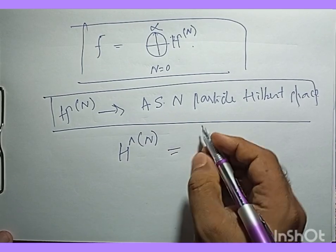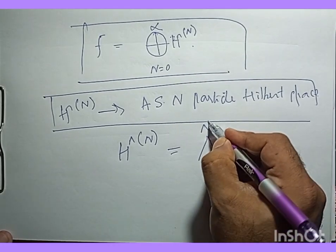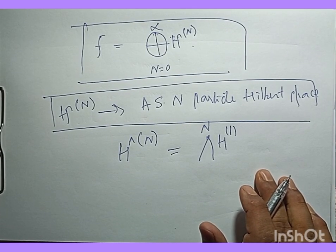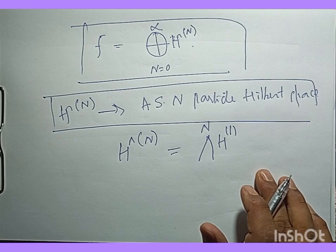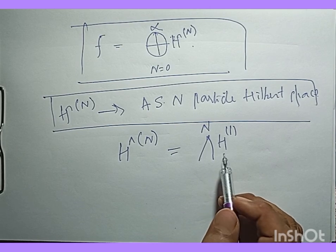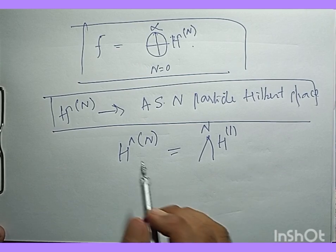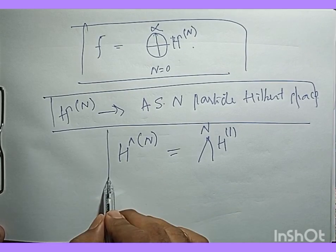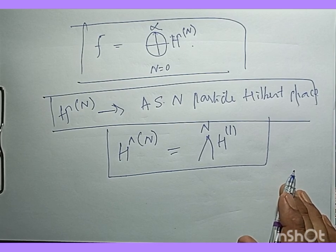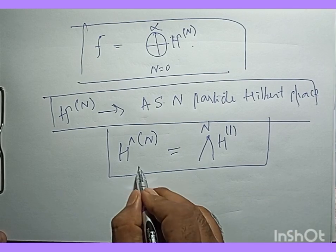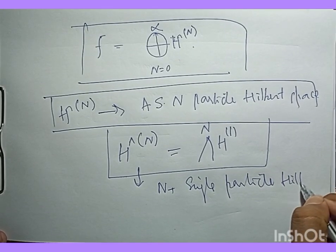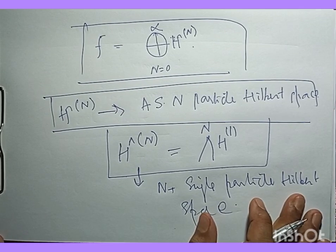This anti-symmetrization ensures that the exchange of any two fermions introduces a negative sign in the wave function, in accordance with Pauli's exclusion principle. So H_n is essentially the exterior (anti-symmetric) product of n single-particle Hilbert spaces H_1.